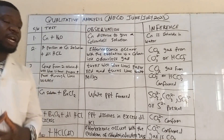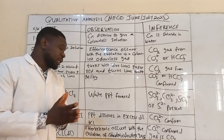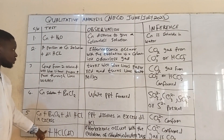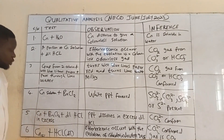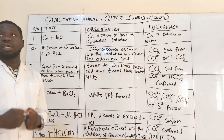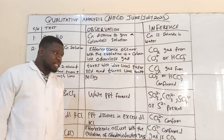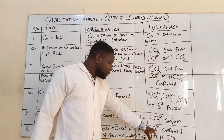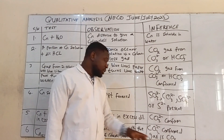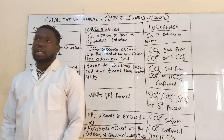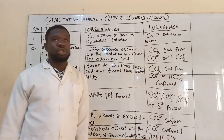Another test you can carry out to confirm that the gas is actually CO₂ from CO₃²⁻: bring a sample of the solid salt and then add dilute HCl directly to it. You will notice a very vigorous effervescence occurring with the evolution of a colorless, odourless gas. If that happens, you will report that it confirms the ion present is CO₃²⁻ and the gas coming out is CO₂ from CO₃²⁻.